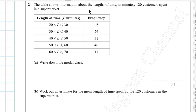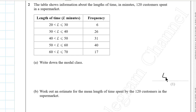Question 2. The table shows information about the length of time in minutes 120 customers spent in a supermarket. To write down the modal class, look at the highest frequency, which is 40. The modal class is opposite 40, which is more than 15 and less than or equal to 60, as it has the most frequency customers.